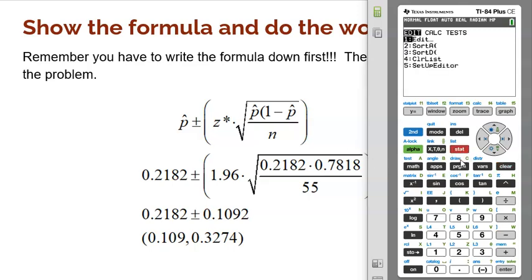It's really simple. Just hit the STAT button, slide over to TESTS. We're looking for a one proportion interval. You'll see a lot of different things here. Just keep going down. We see one proportion z interval - it's option A right there. So we're going to select that.